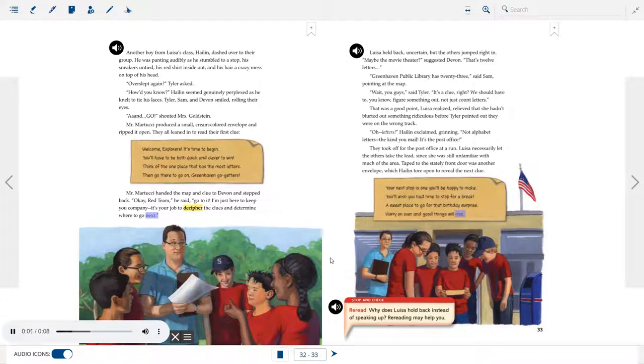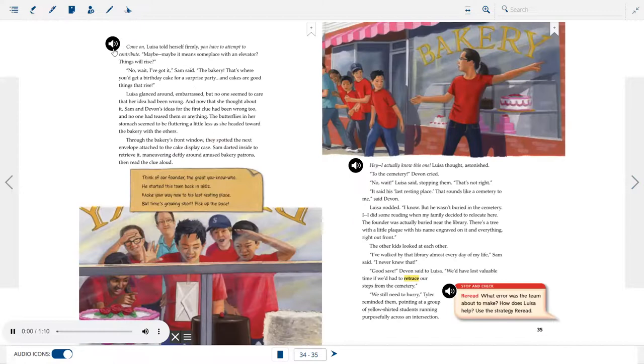They took off for the post office at a run. Louisa necessarily let the others take the lead, since she was still unfamiliar with much of the area. Taped to the stately front door was another envelope, which Halen tore open to reveal the next clue. Your next stop is one you'll be happy to make. You'll wish you had time to stop for a break. A sweet place to go for that birthday surprise. Hurry on over, and good things will rise. Stop and check. Reread. Why does Louisa hold back instead of speaking up? Come on, Louisa told herself firmly. You have to attempt to contribute. Maybe, maybe it means someplace with an elevator, things will rise? No, wait, I've got it, Sam said. The bakery. That's where you'd get a birthday cake for a surprise party. And cakes are good things that rise. Louisa glanced around, embarrassed, but no one seemed to care that her idea had been wrong. And now that she thought about it, Sam and Devin's ideas for the first clue had been wrong, too, and no one had teased them or anything. The butterflies in her stomach seemed to be fluttering a little less as she headed toward the bakery with the others.